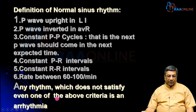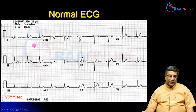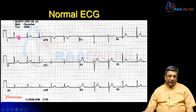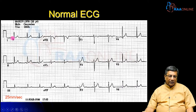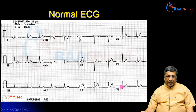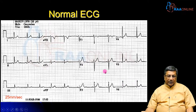To diagnose normal sinus rhythm on the ECG, first look at the P wave in L1 — it should be upright — and in AVR — it should be inverted. Then measure the interval between two successive P waves; for example, if it is five squares, it should remain five squares throughout — a constant PP interval. Then measure the PR interval; if it is 0.18 seconds, it should remain 0.18 seconds throughout. Then check the RR interval; if it is five squares, it should remain five squares throughout.